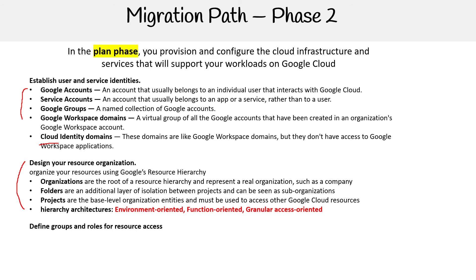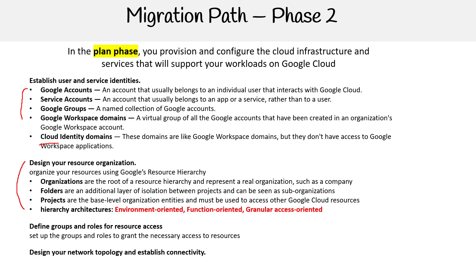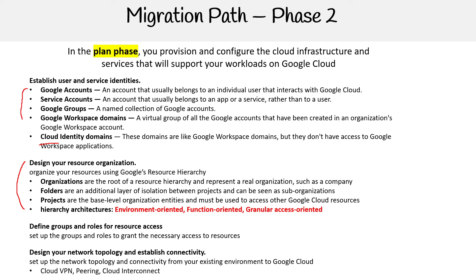Define groups and roles for resource access — set up groups and roles to grant the necessary access to resources. Design your network topology and establish connectivity from your existing environment to Google Cloud. This could be via Cloud VPN, VPC peering, or Cloud Interconnect. At least Cloud VPN and Cloud Interconnect are going to show up on the exam.